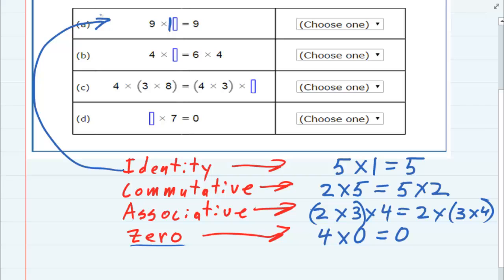And then for B, we have four times something equals six times four. It looks like the only thing that's being changed there is the sequence, four times six, six times four. So that is commutative.